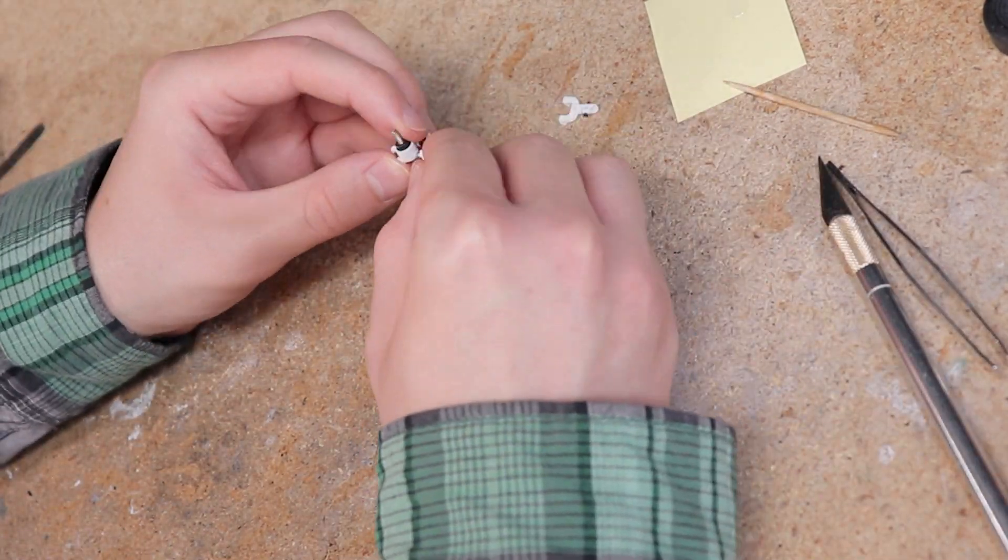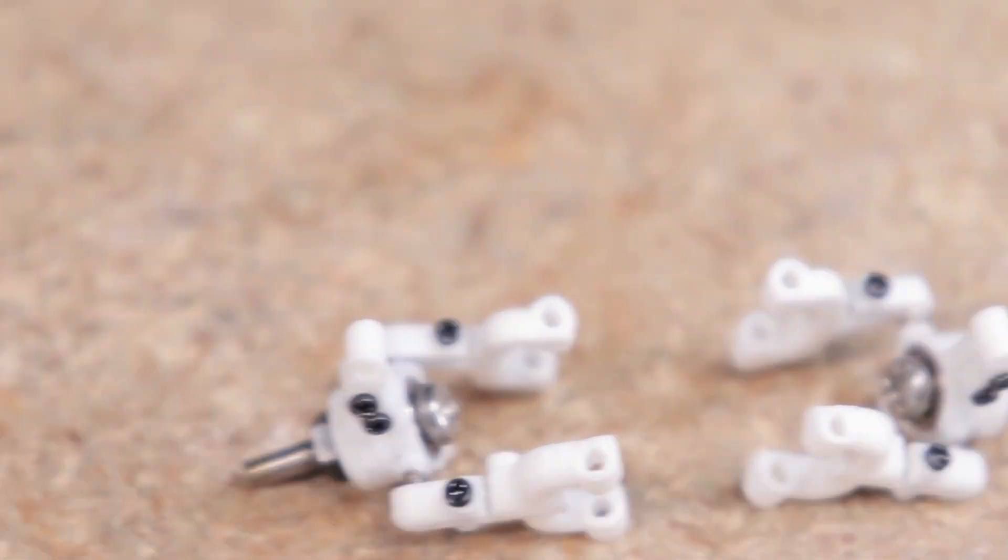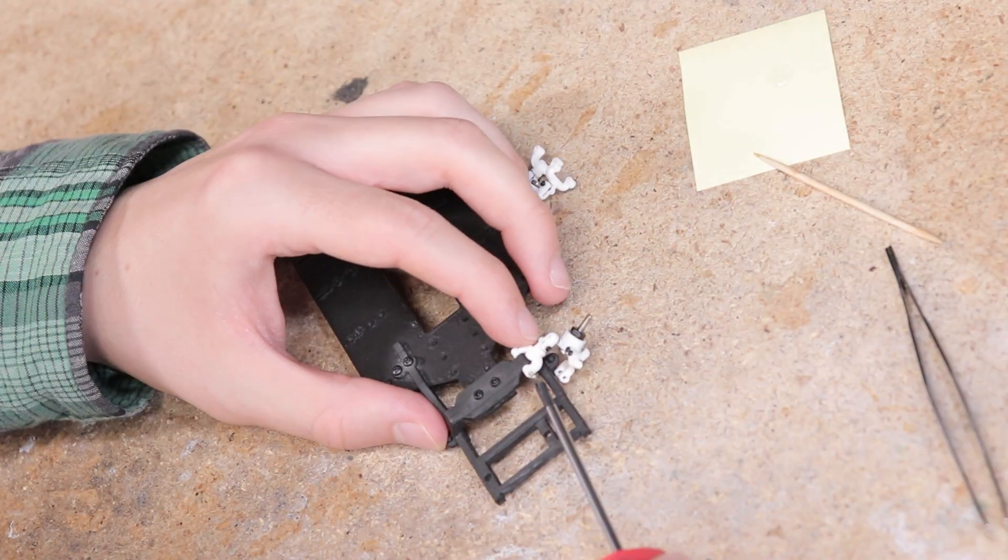Now at this point I had the knuckles assembled and the upper and lower control arm secured to them. With the paint on the chassis now dry I mounted each control arm and I also installed the springs.